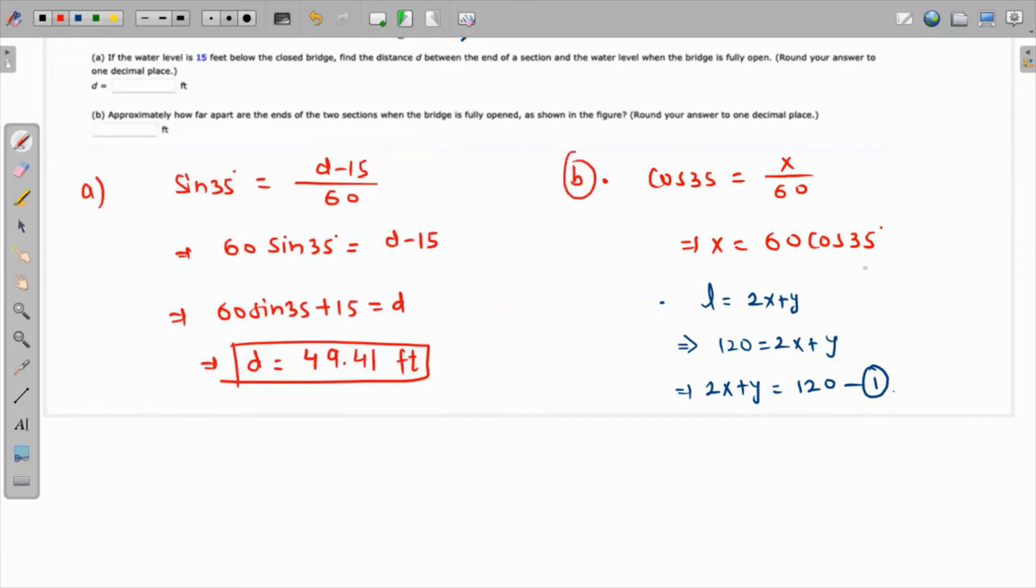I'm going to substitute x back in to get the value of y. The value of y is 120 minus 2x, where x is 60 cosine of 35 degrees. Let me grab my calculator: 120 minus 2 times 60 cos of 35 equals 21.70 feet. This is the answer to part b, the distance between the open bridges. Thank you.